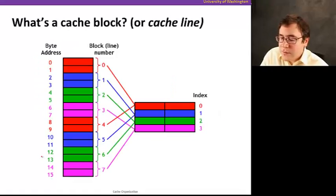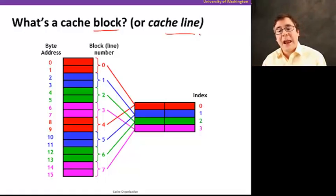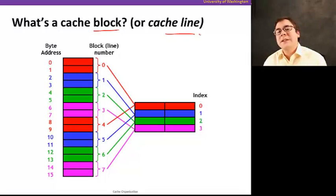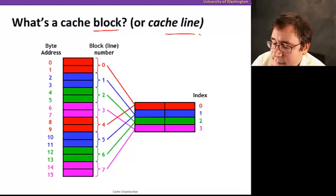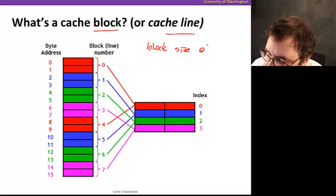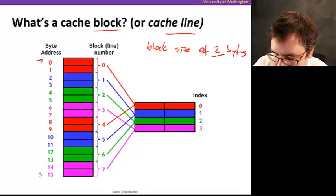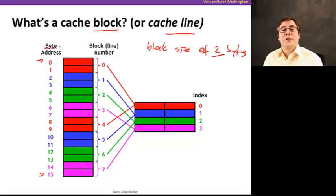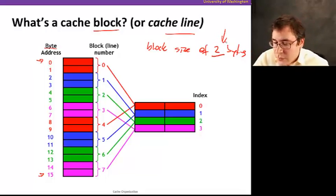A very important question in a cache is: what's a block or a cache line? When we talked about spatial locality, we said we move data from memory to the cache in blocks bigger than a single byte. That helps spatial locality because we bring not only the piece of data needed by the program but also data located close by in memory. Suppose we have a block size of 2 bytes, and our memory goes from address 0 to address 15 as byte addresses. Each cache line maps to 2 bytes in memory.